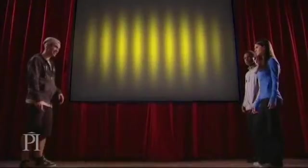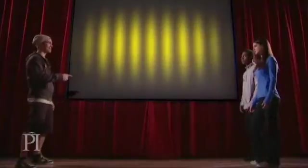Remember Thomas Young's double slit experiment? Yeah. It showed that light produces an interference pattern. Right. So light is a wave. Right again. But what happens if we turn down the intensity of the light? Like we did with the electrons. Exactly.